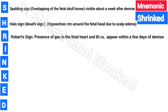R is the Roberts Sign, which is the presence of gas in the fetal heart, blood vessels, or abdomen. This can appear within a few days after fetal demise and is a critical sign to watch for.